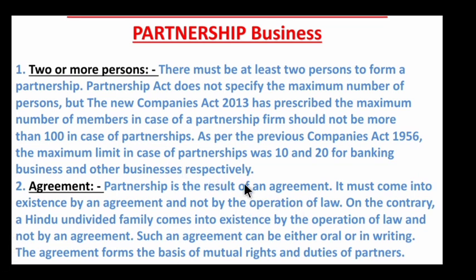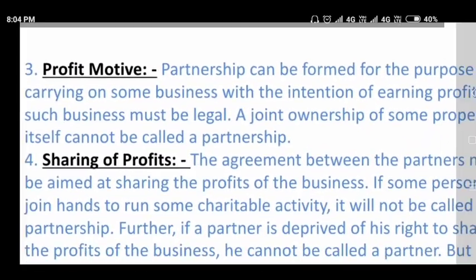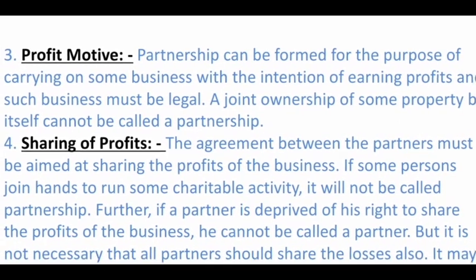The second characteristic is agreement. Partnership must come into existence by an agreement, and not by the operation of law. On the contrary, a Hindu Undivided Family (HUF) comes into existence by operation of law and not by an agreement. The agreement can be either oral or in writing. The agreement forms the basis of mutual rights and duties of partners. The written agreement between partners is called the partnership deed.